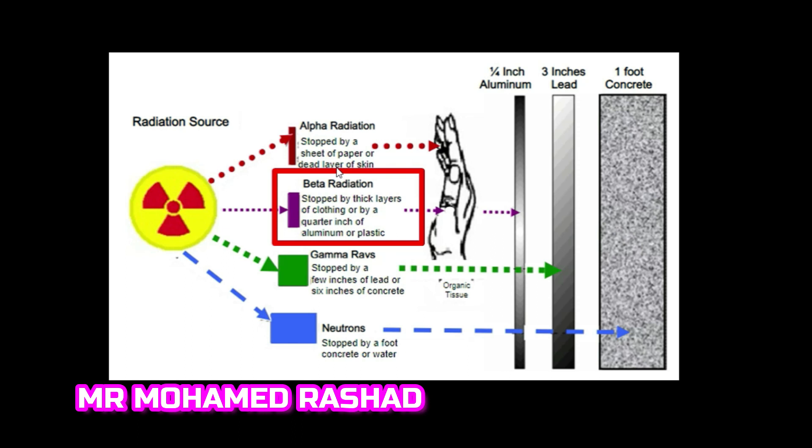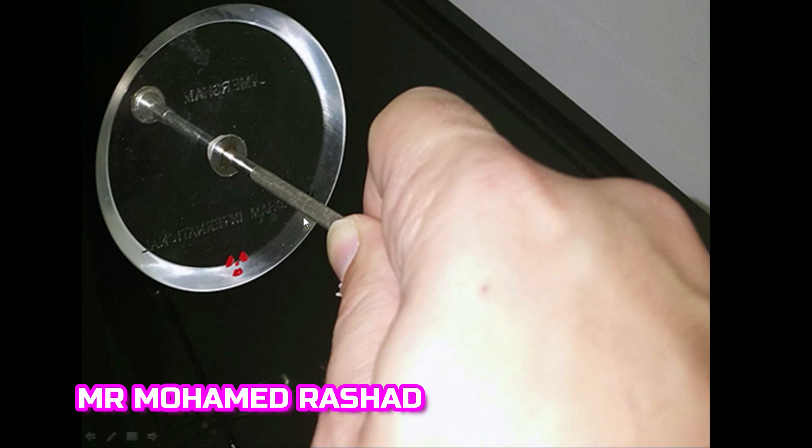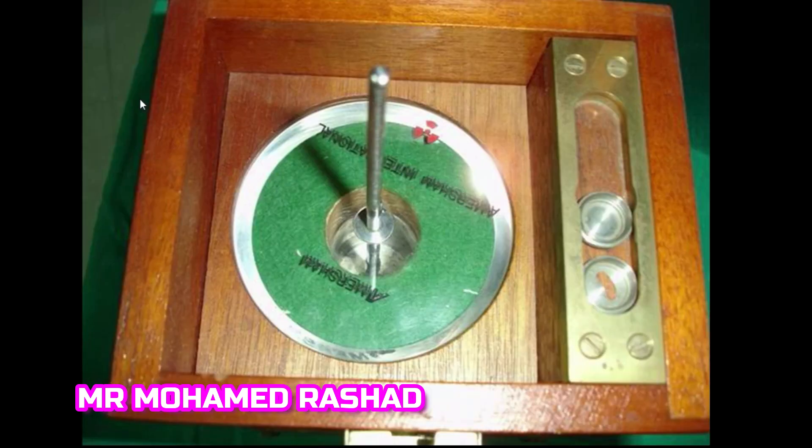Beta radiation is stopped by thick layers of clothing or by a quarter inch of aluminum or plastic. This is our probe used in delivering beta radiation in ophthalmology. It has a plastic shield, and here is the emitter containing strontium-90. The strontium-90 is kept in a lead protective box and comes with different sleeves according to its uses.